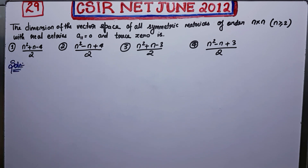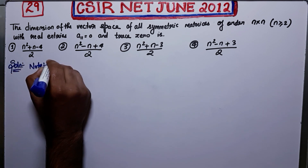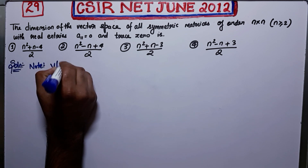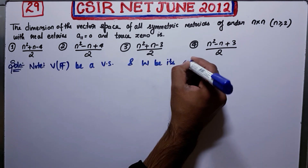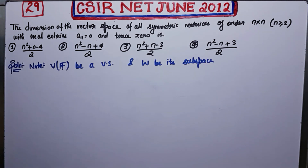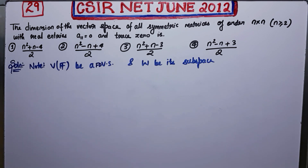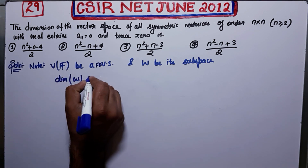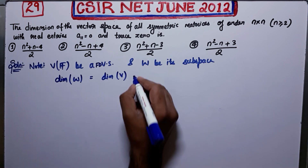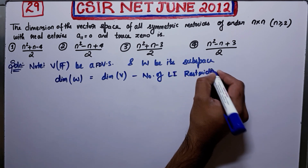Before proceeding, here is a key note. Let V over F be a finite dimensional vector space and W be its subspace. Then the dimension of W is equal to the dimension of V minus the number of linearly independent restrictions. This is the formula we'll use to find the dimension of the subspace W.